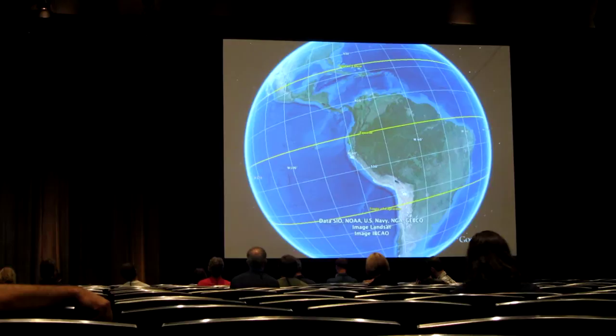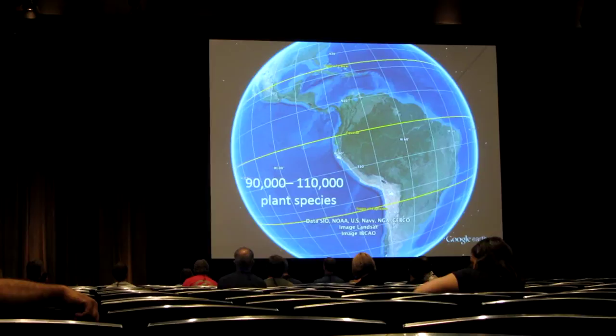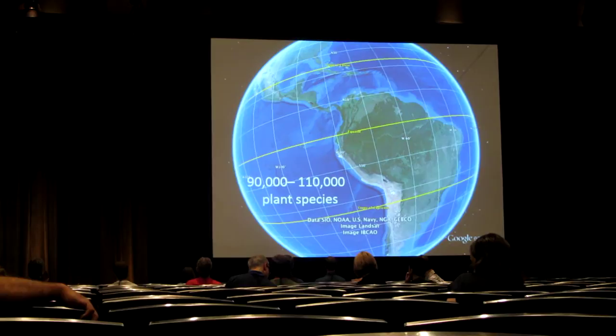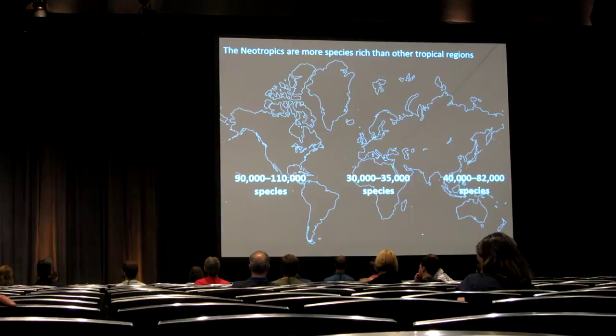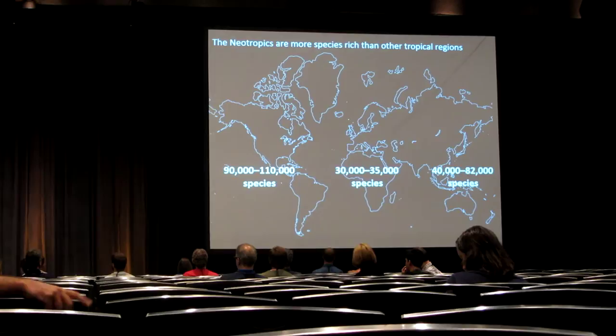Before I get into that, I first want to tell you about the Neotropics, or the American Tropics, which are the region of the world between the tropics of Cancer and Capricorn in the Western Hemisphere, spanning from southern Mexico in the north down through southern Brazil in the south. They're an incredibly biodiverse region of the world, with between 90 and 110,000 species of vascular plants known. To put that into a global context, between 30 and 35,000 species of plants are known from the African tropics, and between 40 and 82,000 in the Asian tropics.